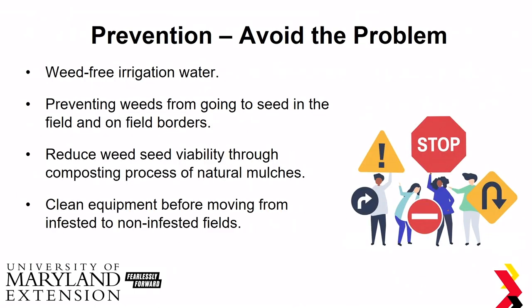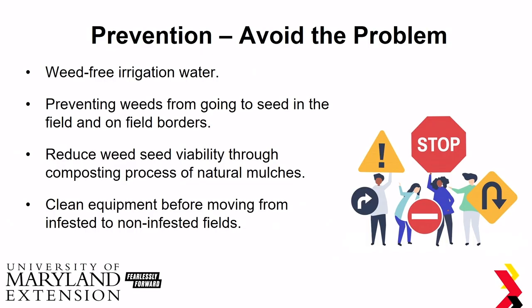The next step in good weed management is prevention. Use tactics like weed-free irrigation water and prevent weeds from going to seed on your field edges and borders. Don't just worry about weeds in your crop — worry about stuff coming in from unwanted areas as well. You can also reduce seed viability through processes like composting or natural mulches, and be sure you're composting long enough so you don't introduce additional weed seed into your mulches.